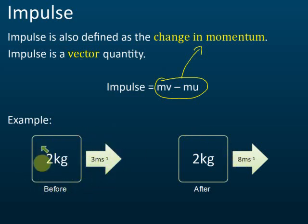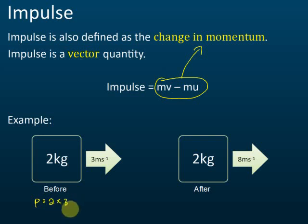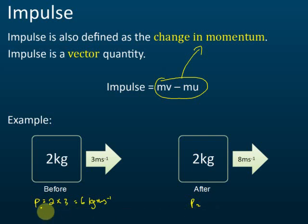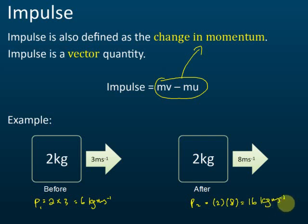What's the momentum before the force acts on this object? Momentum p1 equals mass times velocity, which is 2 kg times 3 m/s, giving 6 kg m/s. The momentum after, p2, equals 2 kg times 8 m/s, which is 16 kg m/s.